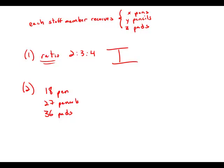Well, first of all, notice that these numbers are in the same ratio, 18 to 27 to 36. This is, in fact, the same ratio as two to three to four, so that makes sense.